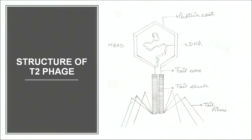Another scientist, Hershey and Chase, worked on a bacteriophage to prove beyond doubt that DNA is the genetic material. A bacteriophage is a virus that infects bacteria, and the T2 bacteriophage infects E. coli. Just as HIV is a virus in humans and tobacco mosaic virus in plants, bacteriophages infect bacteria. A bacteriophage has a very simple structure — it has a protein coat and a DNA molecule present inside the protein coat.